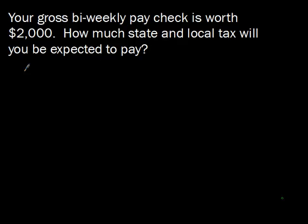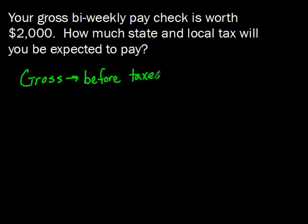The first problem says that your gross bi-weekly paycheck is worth $2,000. How much state and local tax will you be expected to pay? The first thing we need to look at is our gross pay. Gross pay is simply how much you make before taxes. So that means the taxes listed here — state and local — have not been taken out yet. Those are the only two taxes we're looking at for this problem.